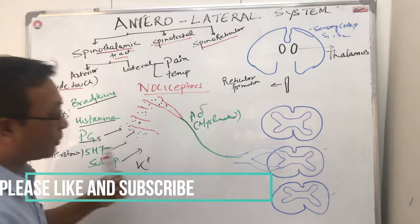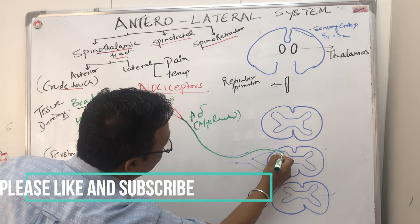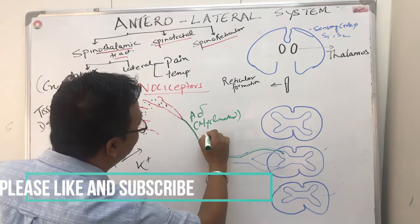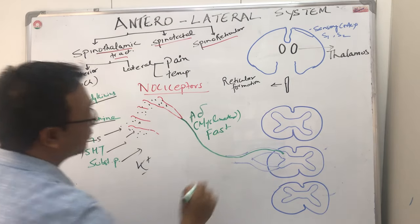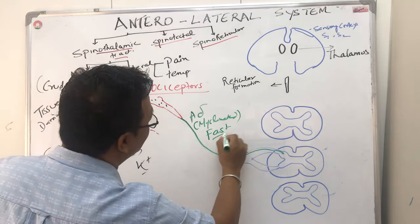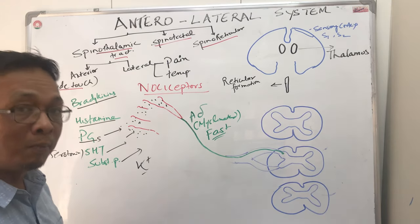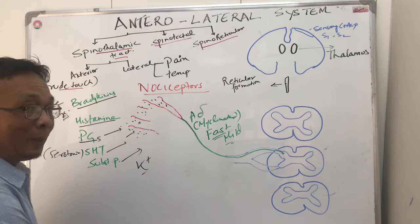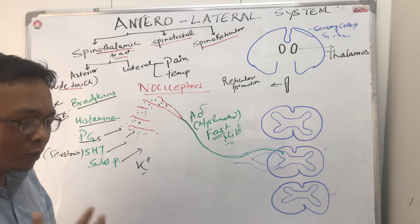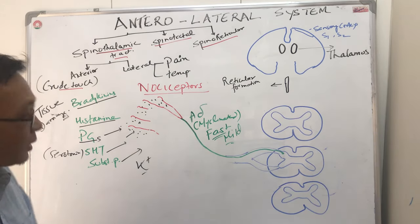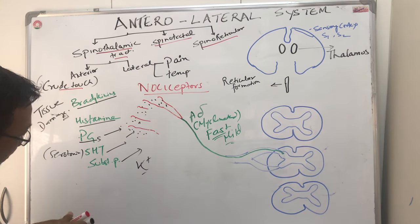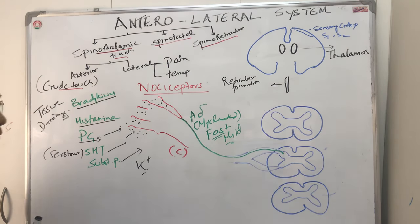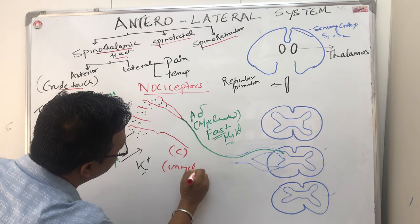A-delta fibers go through the dorsal horn of the spinal cord and terminate there. Because they are myelinated, they carry fast pain — fast but mild. For slow and very severe pain, those pain fibers are carried by C fibers, which are unmyelinated fibers.